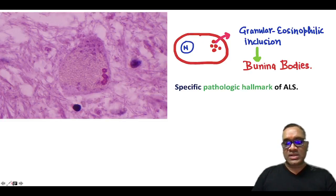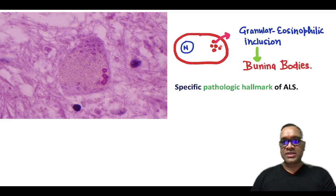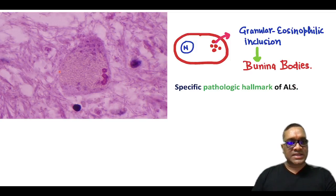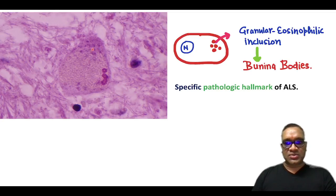In these patients, when you look at the biopsy, it will show you diagnostic Bunina bodies. Bunina bodies are eosinophilic granular inclusions, as you can see here in this picture. They are a specific pathological hallmark of amyotrophic lateral sclerosis. In the neuron you can see these eosinophilic granular intraneuronal inclusions — these are the Bunina bodies which are diagnostic of ALS.